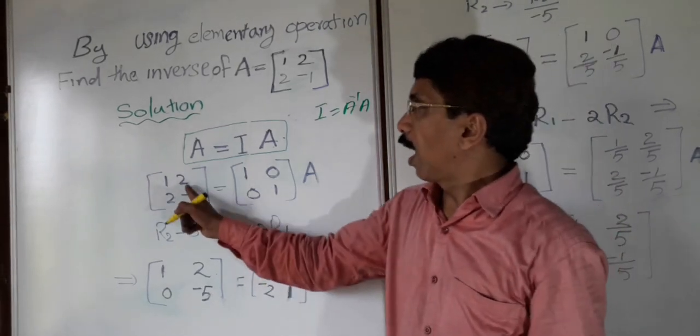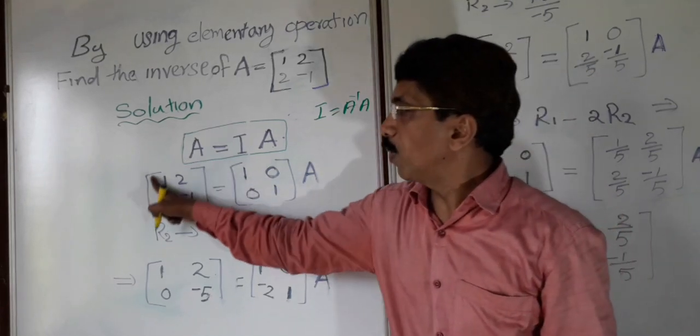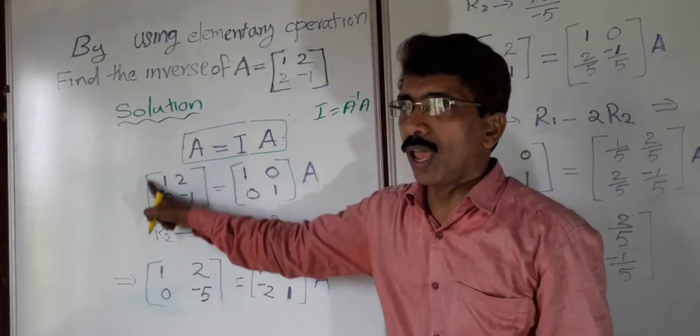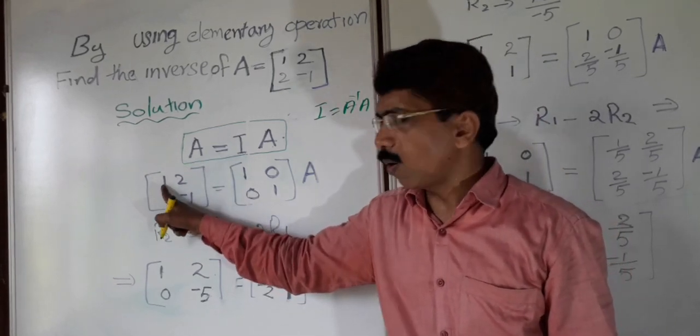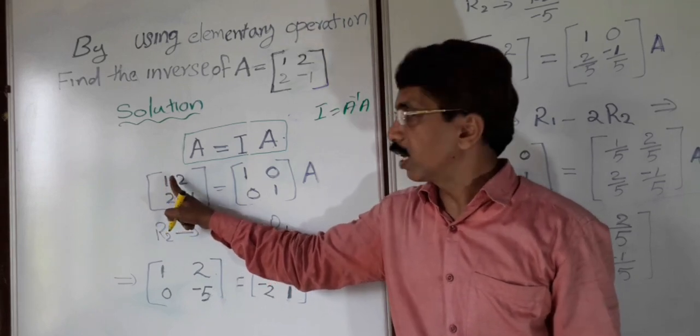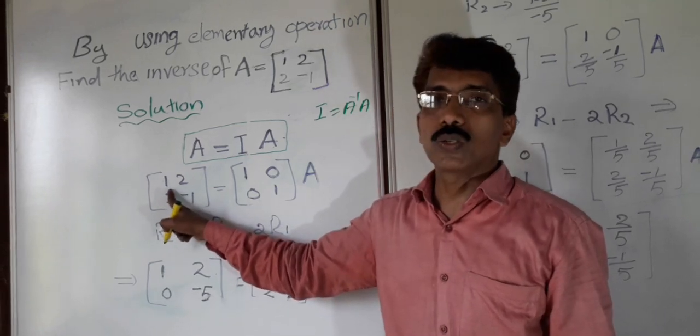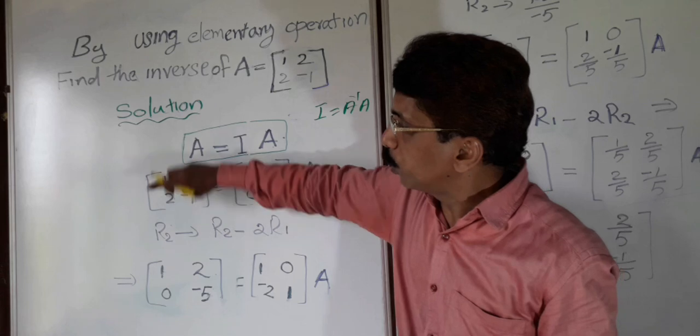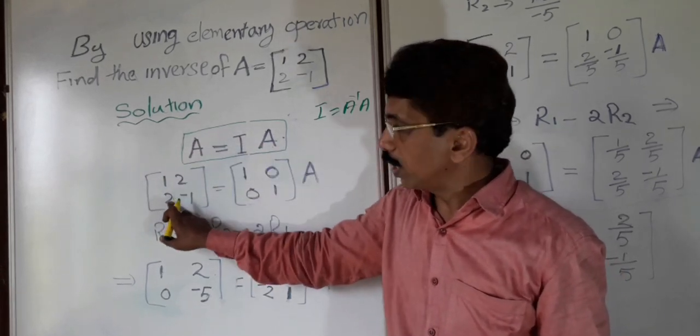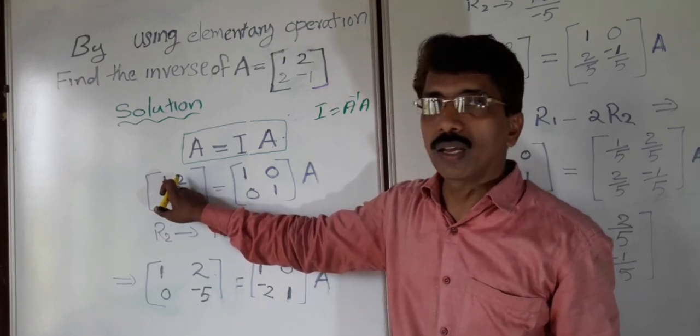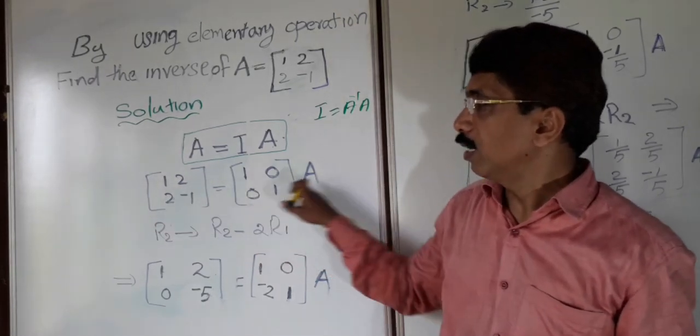I have written A here, and this is I, and this is A. Look here, this A I want to make as I. This one I want to make as I. What is already 1, no need of changing, let it be there. This one we have to change to 0. From here, if you subtract 2 times 1, you will get 0. So 2 minus 2 into 1 gives 0. You can apply that for the entire row.